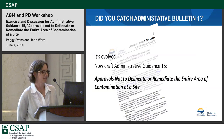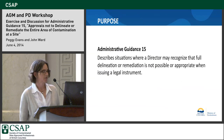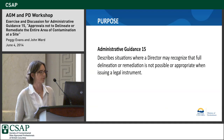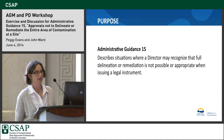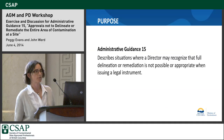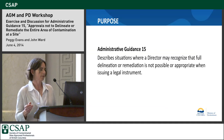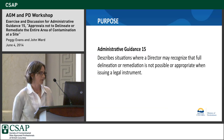So it's now called 'Approvals not to delineate or remediate the entire area of contamination at a site.' It describes situations where a director may recognize that full delineation or remediation of the entire extent of contamination is not possible or appropriate for purposes of issuing a legal instrument — AIPs and COCs in the context of P6. Admin guidance also addresses approvals that would support applications for site profile releases.